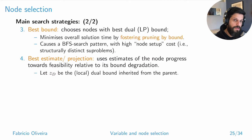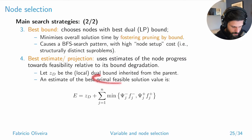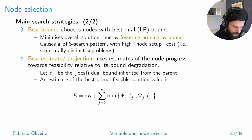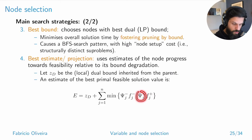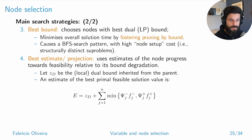For example, let z_d be the local dual bound from the parent. You can calculate an estimate of the best primal feasible solution: it's the dual bound adjusted by the fractional parts you'd have to remove to reach integrality — using pseudo cost estimates for improvement in each direction — taking the more conservative value.